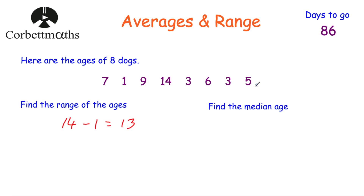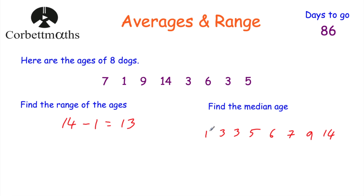Now find the median age. We arrange the ages in order starting with the smallest: 1, 3, 3, 5, 6, 7, 9, 14. Let's check we've got eight values — yes. It's very important to check you've got all the right numbers; sometimes people accidentally write the wrong values. To find the median, cross off the smallest and biggest, the next smallest and biggest, and the next smallest and biggest. We're left with five and six in the middle. The median age is 5.5 years.